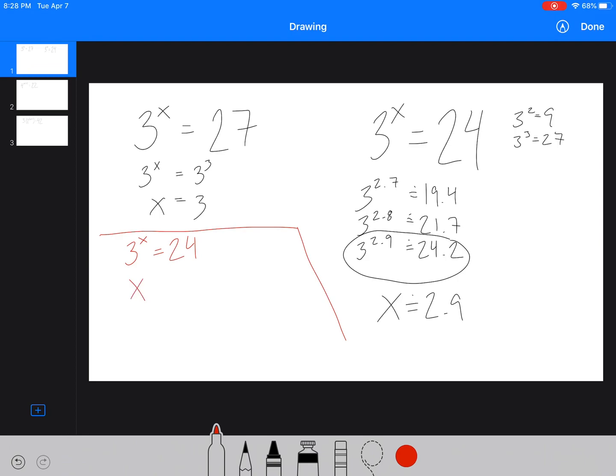Now on our calculator there's a log button. So what we're going to do is we're going to say x, or the exponent here, is equal to the log of everything on the other side of the equation divided by the log of our base.